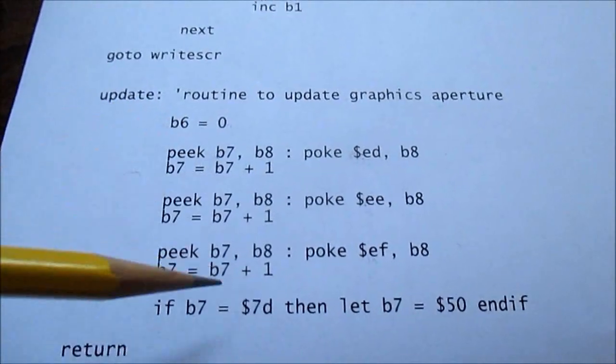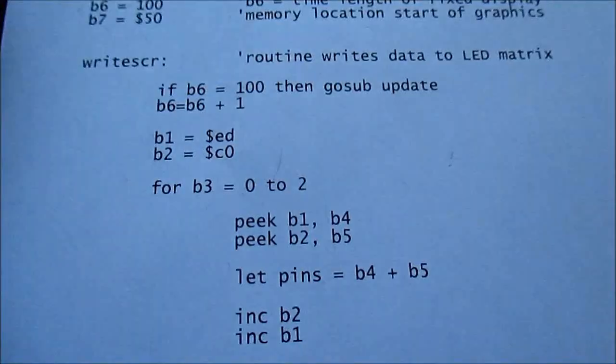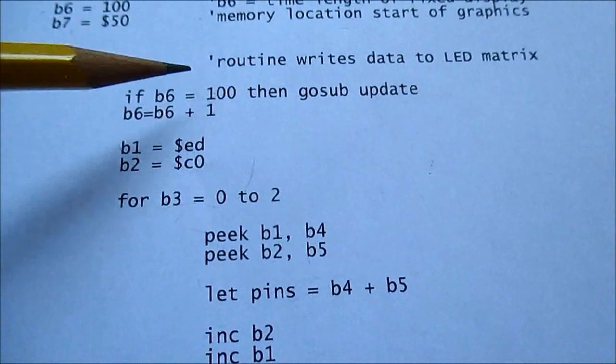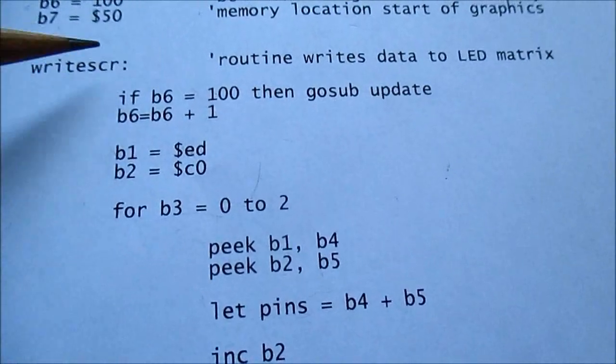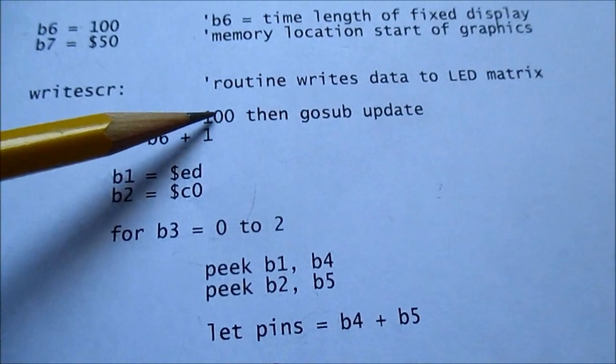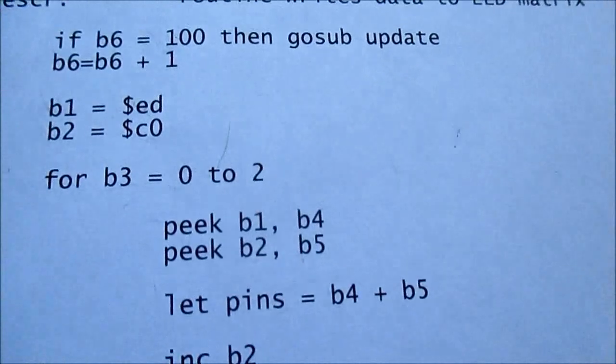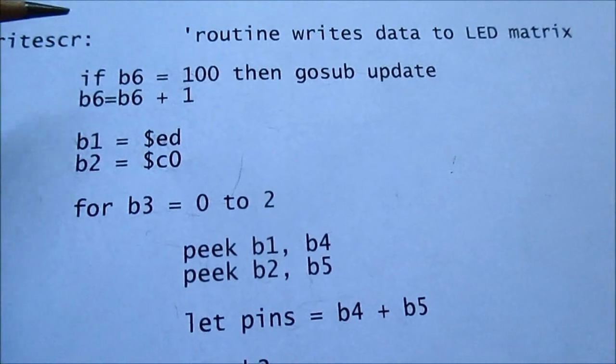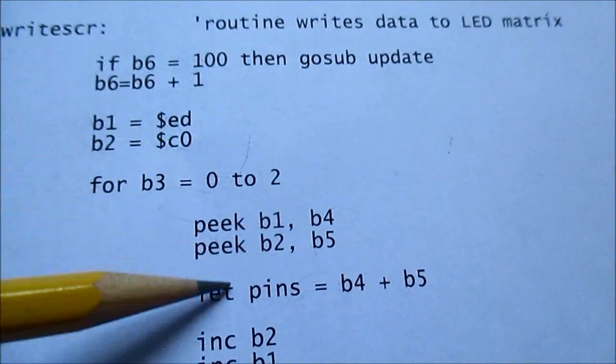Okay, so now we have this stuff put into the graphics aperture. Now all I have to do is write that information to the LEDs, and this is how it's done. Well first it checks the counter. If it reaches 100, it's going to go to the update and load in the next character. But we've just loaded in a character, so now we're going to run through this process.